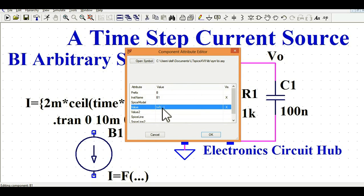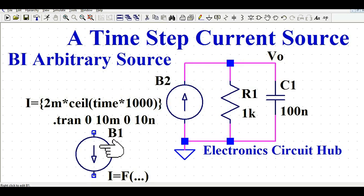So in the bracket you can define any mathematical equation in order to get an arbitrary current source, right? So this is the function, basically a BI.